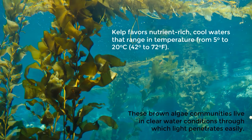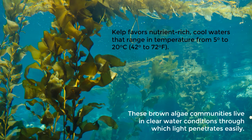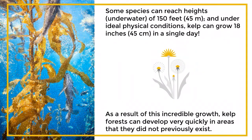Kelp favors nutrient-rich cold waters that range in temperature from 5 to 20 degrees Celsius, or 42 to 72 degrees Fahrenheit. These brown algae communities live in clear water conditions through which light penetrates easily. Some species can reach heights of 150 feet or 45 meters, and under ideal physical conditions, kelp can grow 18 inches or 45 centimeters in a single day. As a result of this incredible growth, kelp forests can develop very quickly in areas that they did not previously exist.